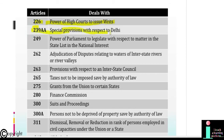Article 239AA: Special provisions with respect to Delhi. Article 249: Power of Parliament to legislate with respect to matters in the State List in the national interest. Article 262: Adjudication of disputes relating to waters of interstate rivers or river valleys. Article 263: Provisions with respect to an interstate council. Article 265: Taxes not to be imposed except by authority of law. Article 275: Grants from the Union to certain states. Article 280: Finance Commission.